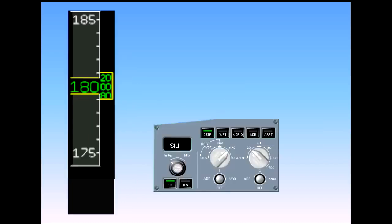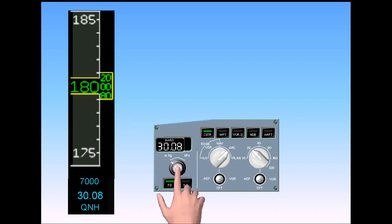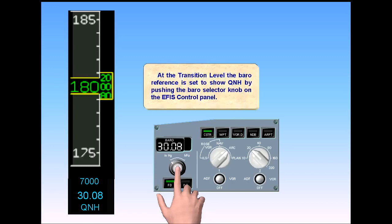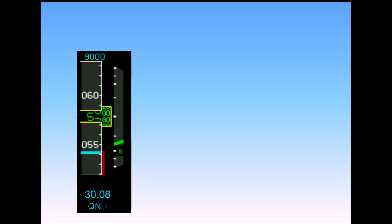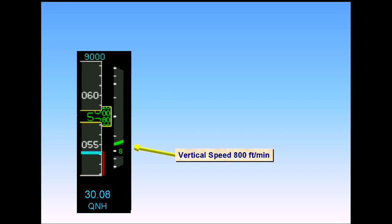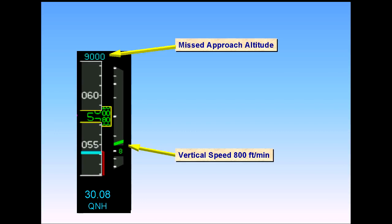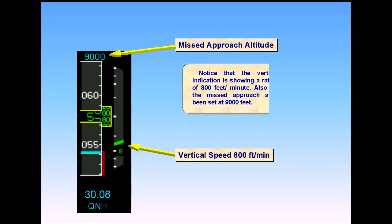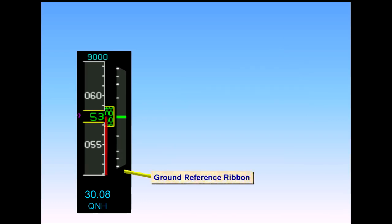At the transition level, the barometric reference is set to show QNH by pushing the barrel selector knob on the EFIS control panel. In the final stages of an approach, the ground reference ribbon will reappear along with the landing elevation line. Notice that the vertical speed indication is showing a rate of descent of 800 feet per minute. Also notice that the missed approach altitude has been set at 9,000 feet. When the aircraft lands, the ground reference ribbon is in the middle of the scale, and the vertical speed indication is at zero.